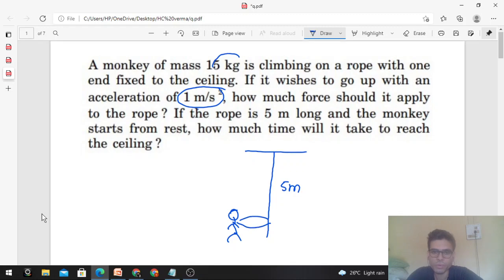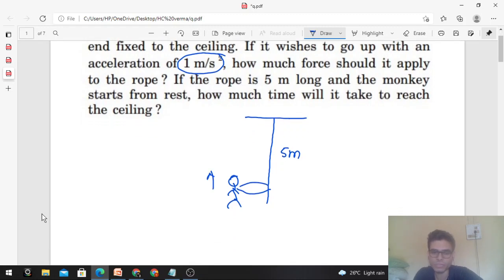We need to find how much force should it apply to the rope. If the monkey goes up, it will pull the rope downward, and by equal and opposite force, the rope will pull on the monkey.